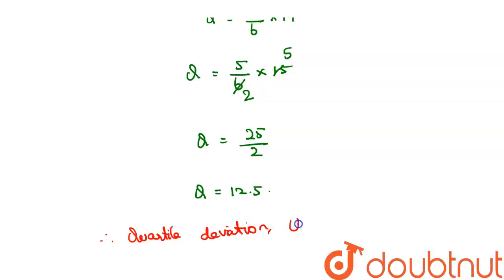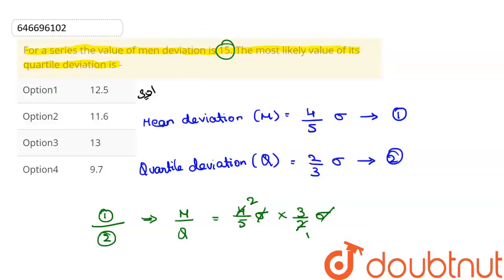Quartile deviation Q is equal to 12.5. So this is the answer for this question. Let's see in the options. From these options, option 1 is the right answer. So 12.5 is the correct one. Thank you.